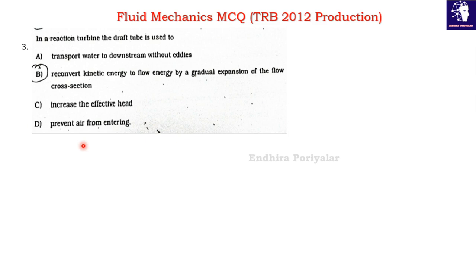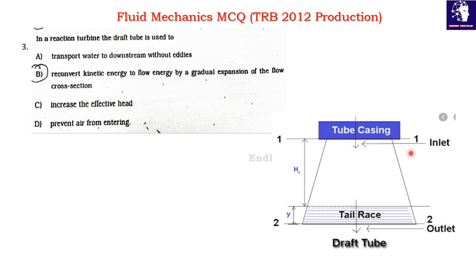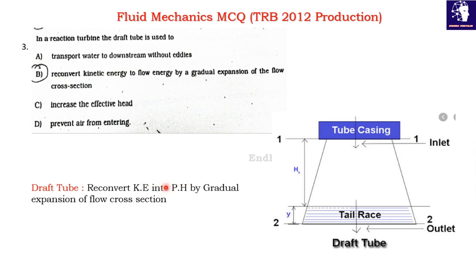Question 3: In a reaction turbine, the draft tube is used to — Option A: transport water to downstream; Option B: convert kinetic energy to flow energy by gradual expansion of flow cross section; Option C: increase the effective head; Option D: prevent air from entering. The draft tube has a conical shape and reconverts kinetic energy into pressure head by gradual expansion of flow cross section. Option B is the correct answer.